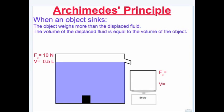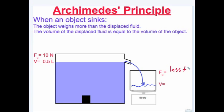According to Archimedes' Principle, when an object sinks, the object weighs more than the displaced fluid. The volume of the displaced fluid is equal to the volume of the object. When an object is placed in the displacement cup, the water level will rise and the water will spill out into the container on the scale. Archimedes' Principle says the weight of this displaced fluid is less than the weight of the object because it sinks.